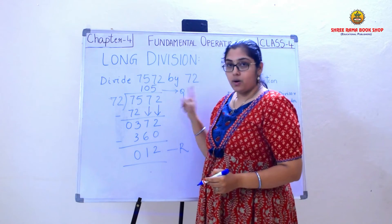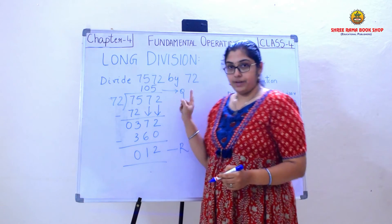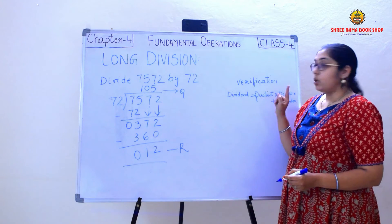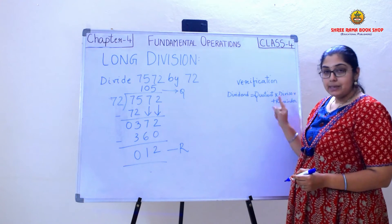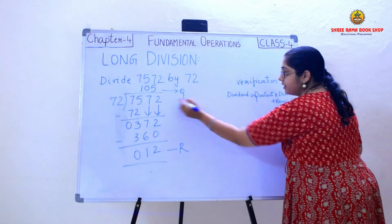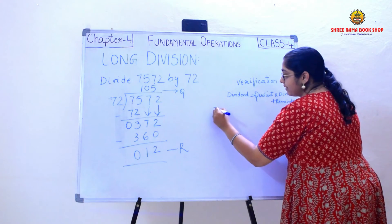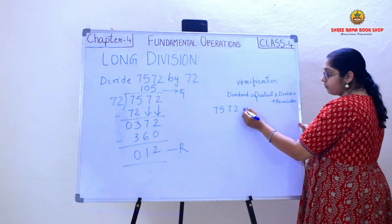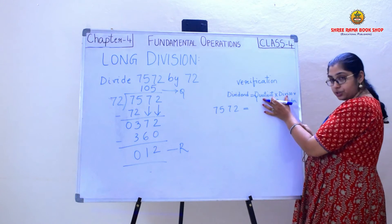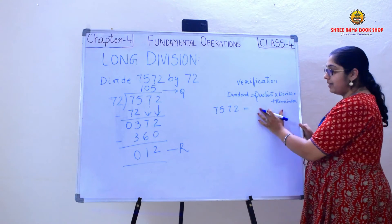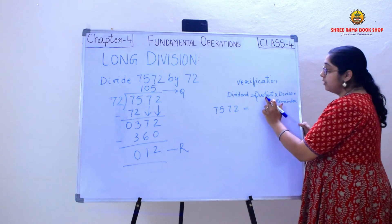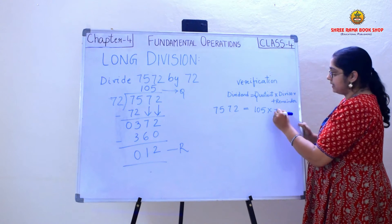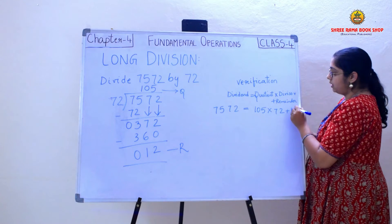Now I will verify whether my long division is correct or not. To verify, we have this verification statement: dividend equals quotient into divisor plus remainder. Now what is the dividend? It is 7572. So this should be equal to the quotient times the divisor added by the remainder. The quotient is 105, the divisor is 72, and the remainder is 12.